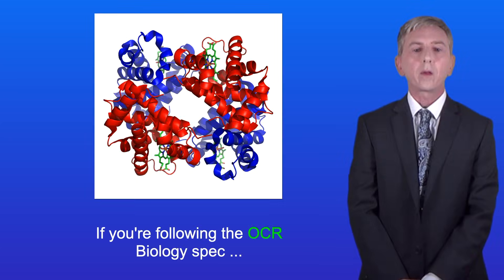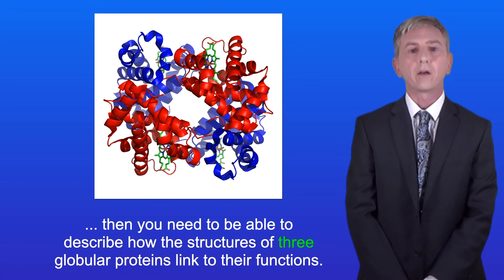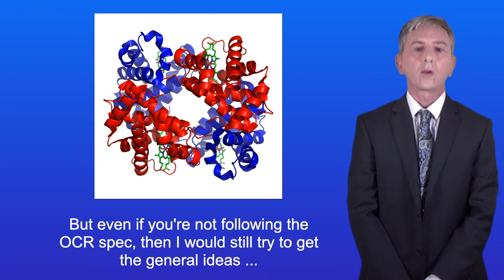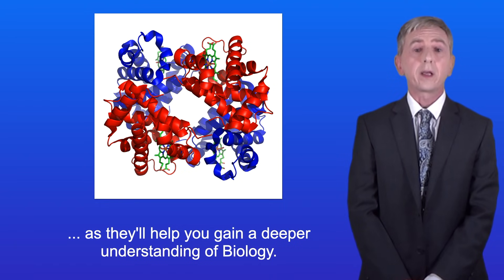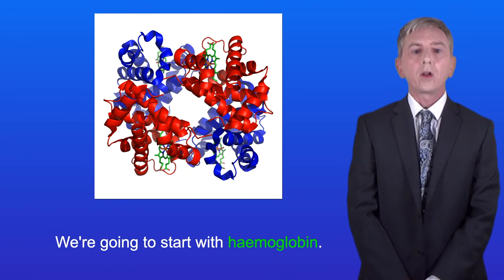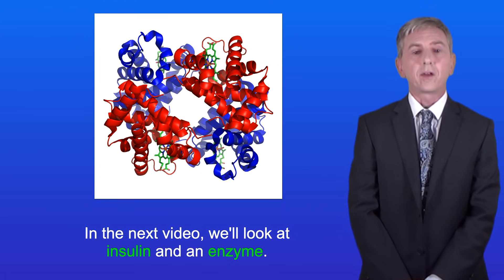If you're following the OCR biology spec then you need to be able to describe how the structures of three globular proteins link to their functions. But even if you're not following the OCR spec, I would still try to get the general ideas as they'll help you gain a deeper understanding of biology. We're going to start with haemoglobin, and in the next video we look at insulin and an enzyme.